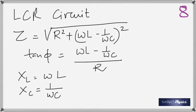For a capacitor, it's exactly the opposite. At DC (frequency = 0), X_C = 1/(ωC) becomes infinite — so a capacitor is a DC blocker. It blocks DC completely. That's an important conceptual point to remember.